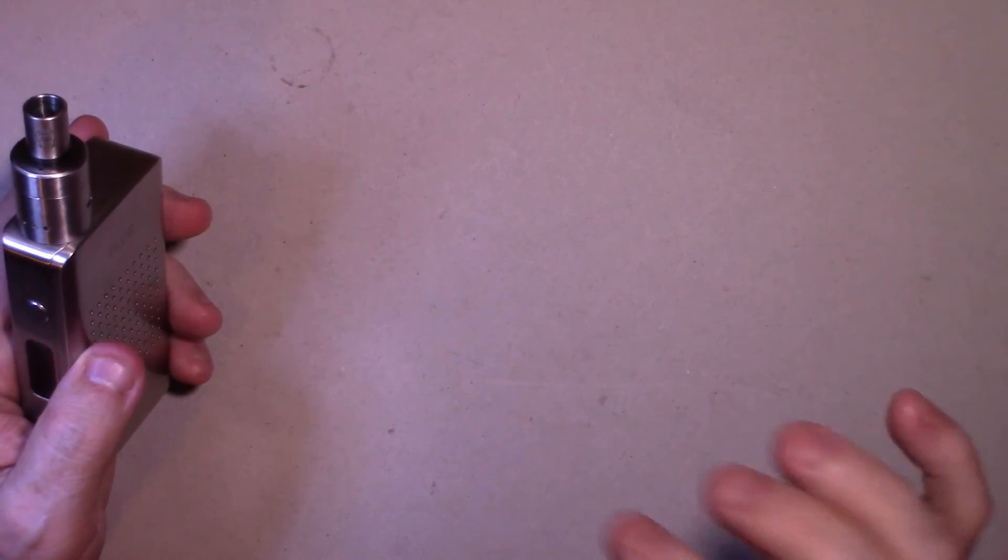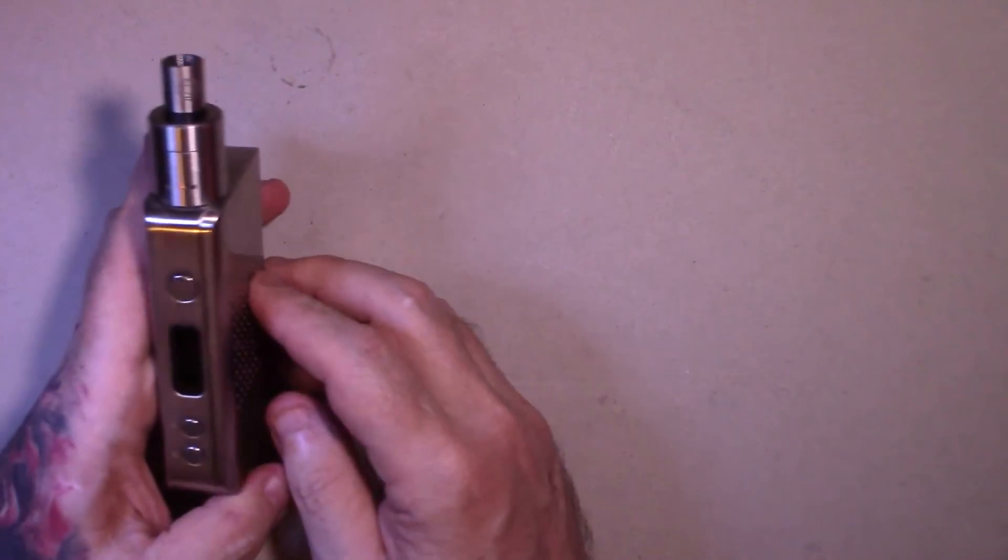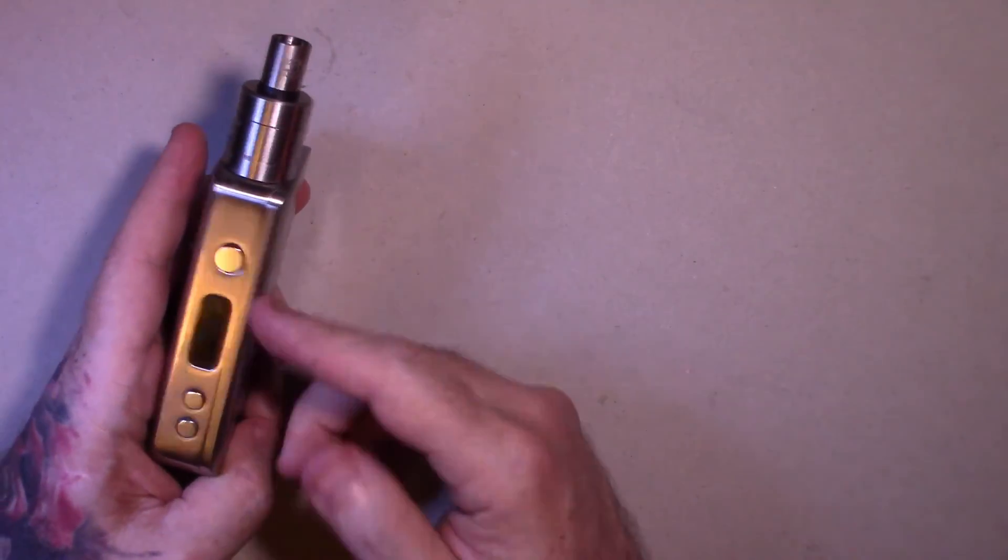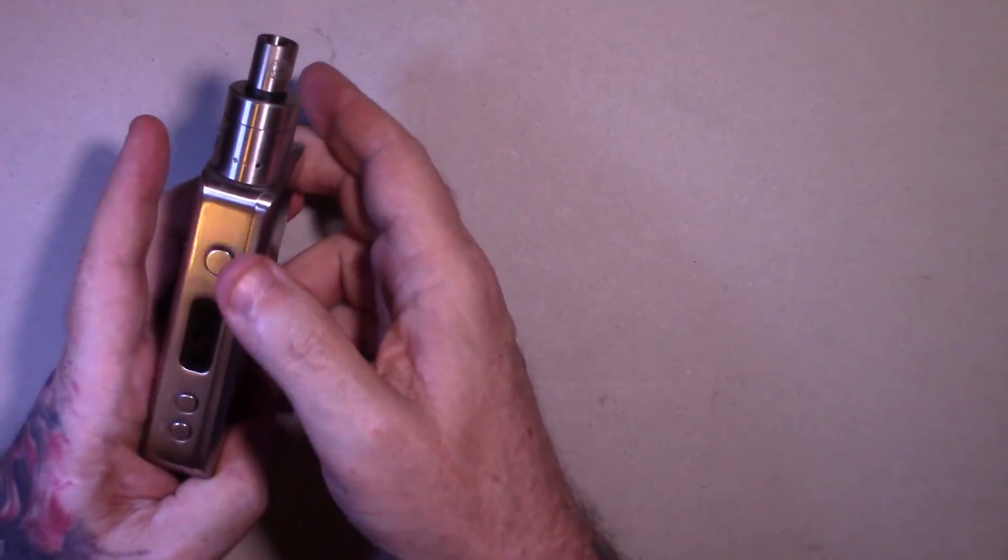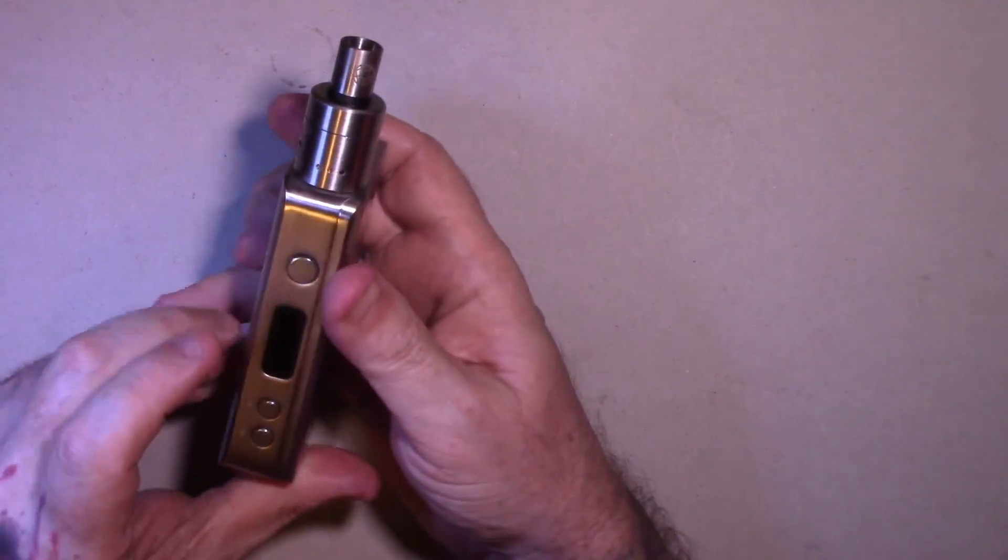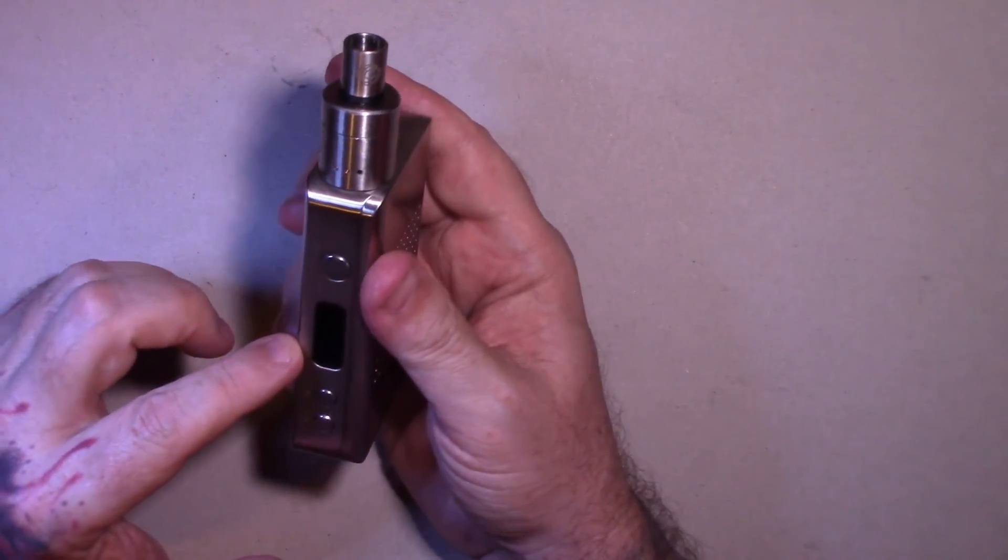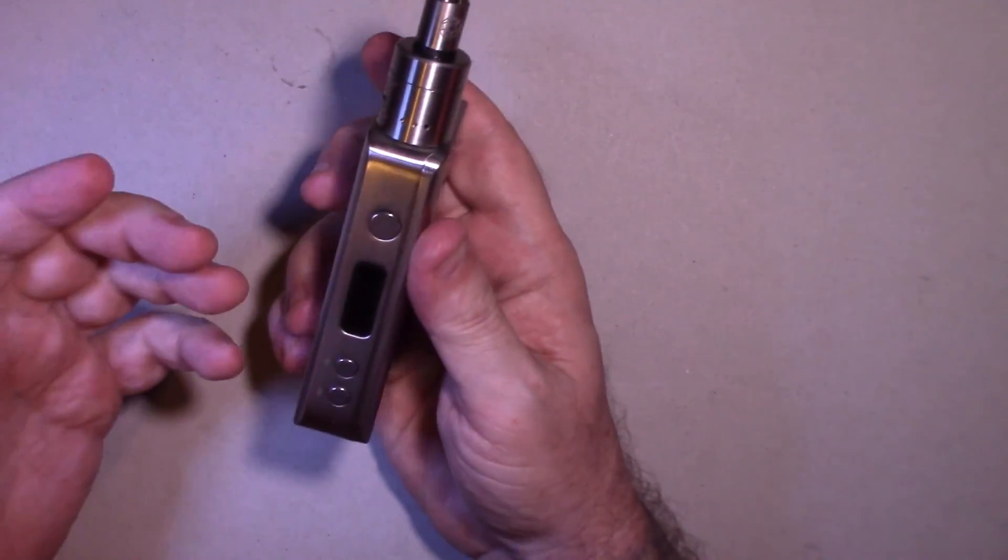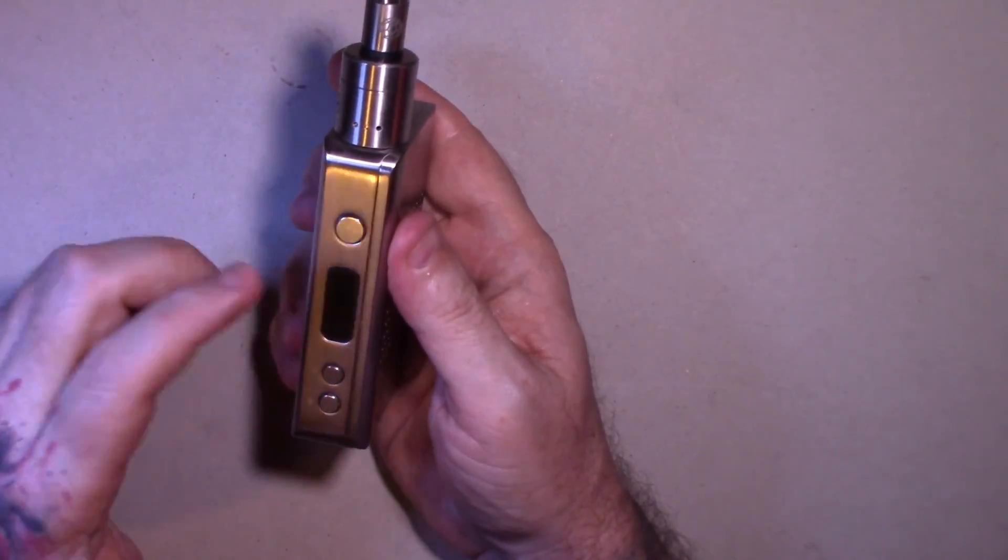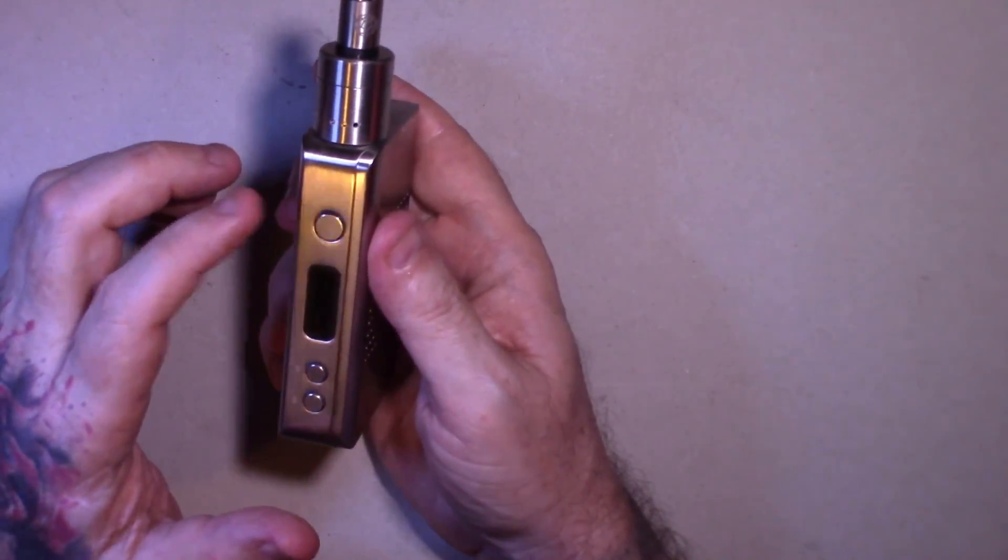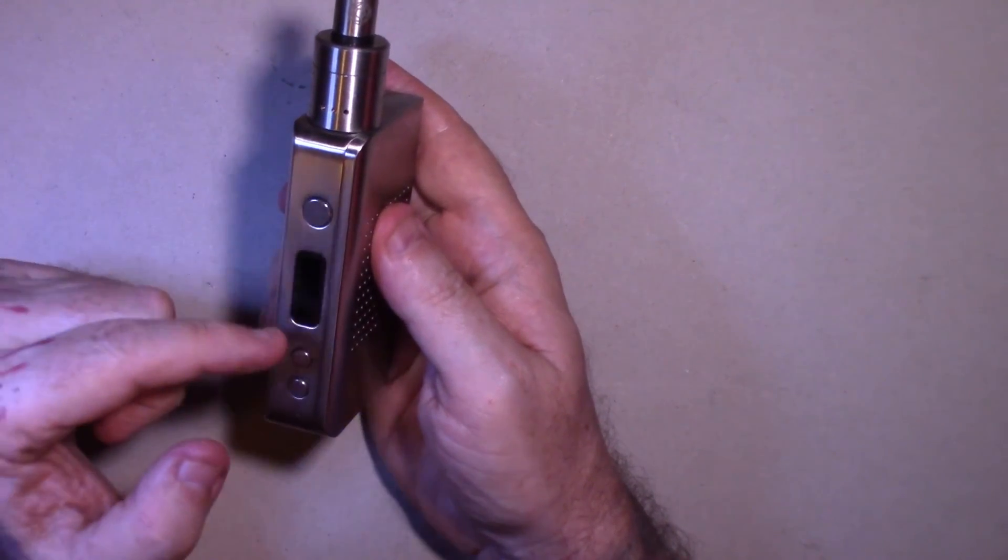So she liked the temperature control. She could set it at 400 degrees or 600 degrees, 500 degrees. And when you hit the button, instead of setting it at 35 watts and it fires at 35 watts, it will take that wattage and the power from the battery and ramp up your coils.